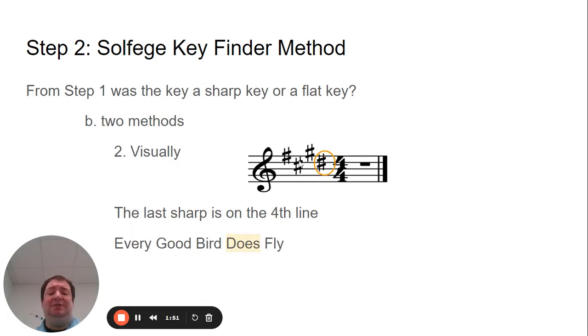Now, method number two is if you know how to do your lines and spaces, you look at the last sharp visually. So here is my last sharp and I just count my lines or spaces. Every good bird does fly. So that's a D sharp. The D line is going through the middle of the sharp, so my last sharp is D.